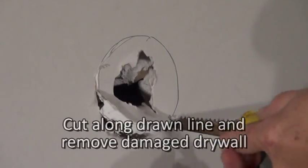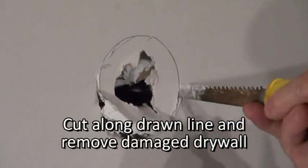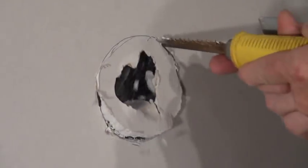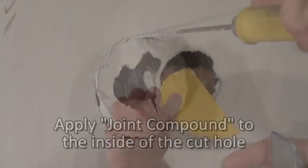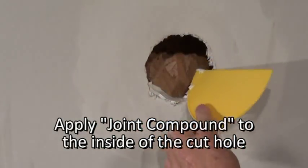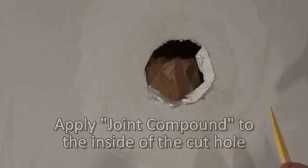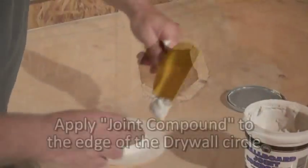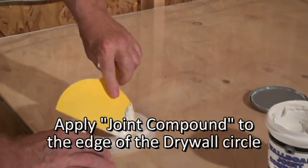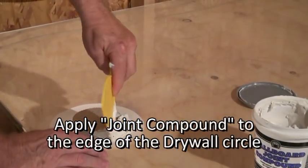Use a drywall saw and cut along the outside of the circle drawn. Apply compound to the inside of the cut circle in the wall. Apply a generous amount of compound along the edge of the drywall circle.